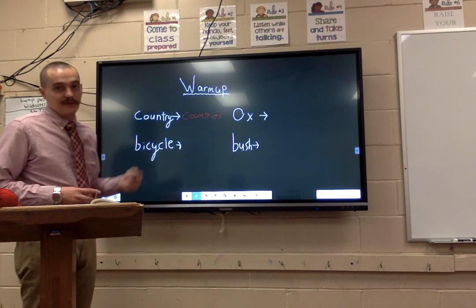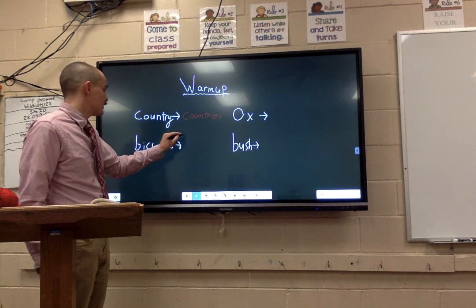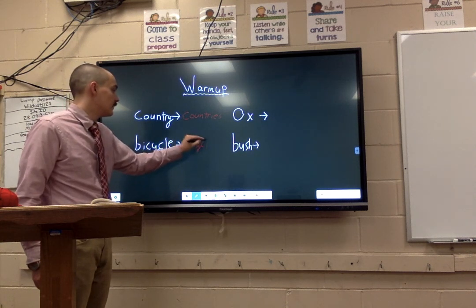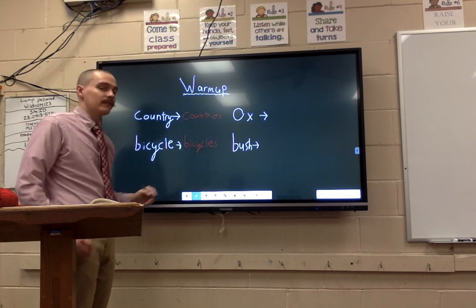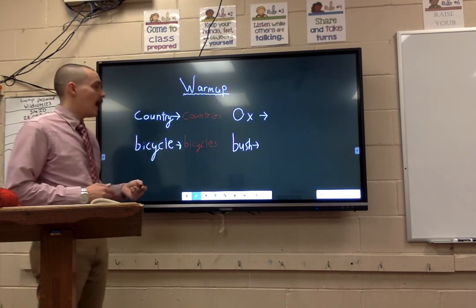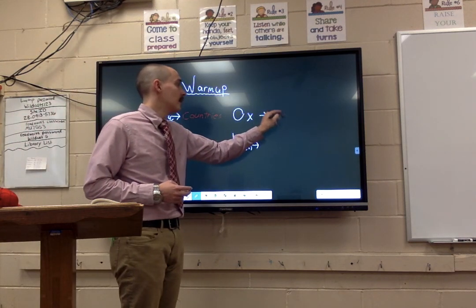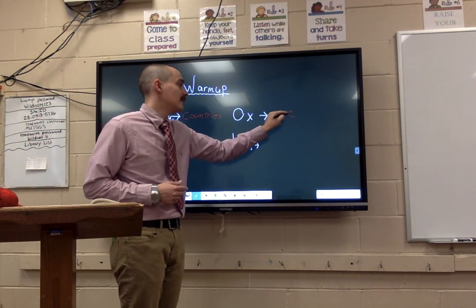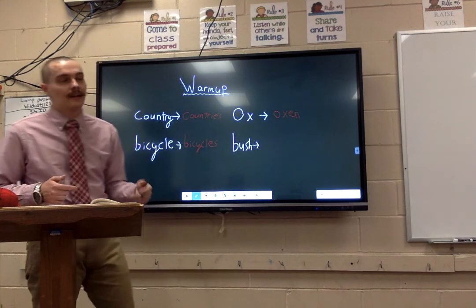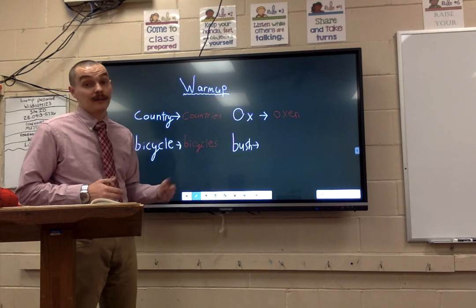Let's get bicycle. Bicycle is pretty easy — all you have to do is add that S. So B-I-C-Y-C-L-E-S. No problem. Now, ox — I keep putting ox because it's one of the more complicated ones. Ox is going to be oxen: O-X, and then you add E-N. That's one of those special plural words that adds something kind of weird and random to the end. Cactus is the same way — a cactus would be cacti.